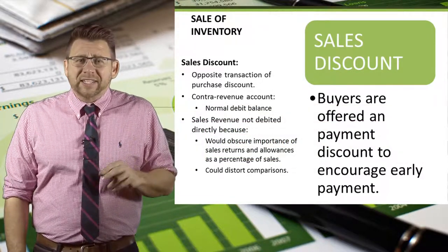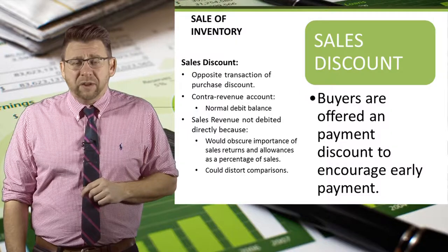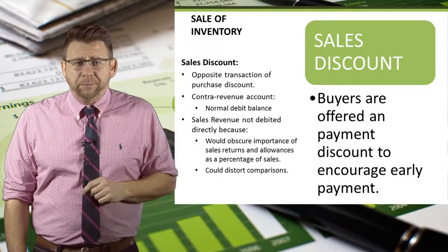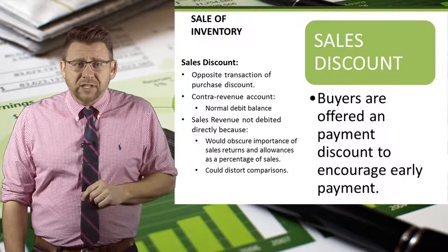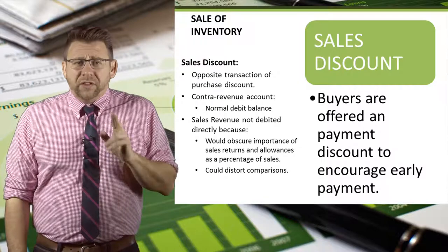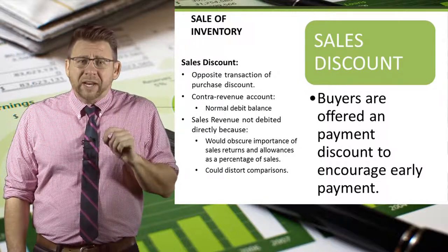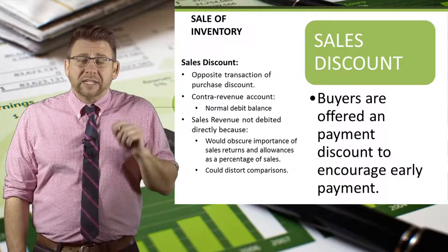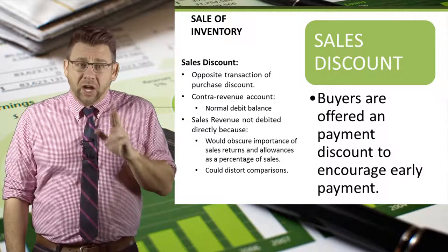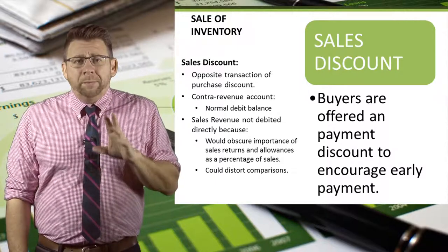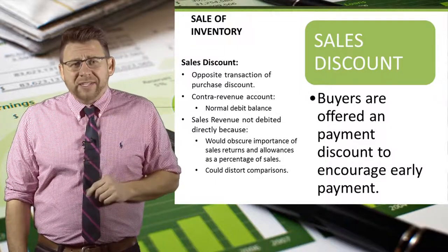A sales discount is the opposite transaction of a purchase discount. Like sales returns and allowances, rather than debit sales revenue, we debit an account called sales discount — a contra revenue account — when a buyer takes a payment discount.